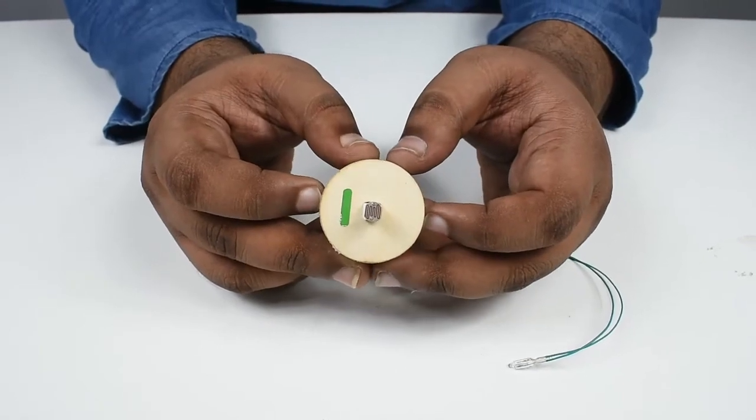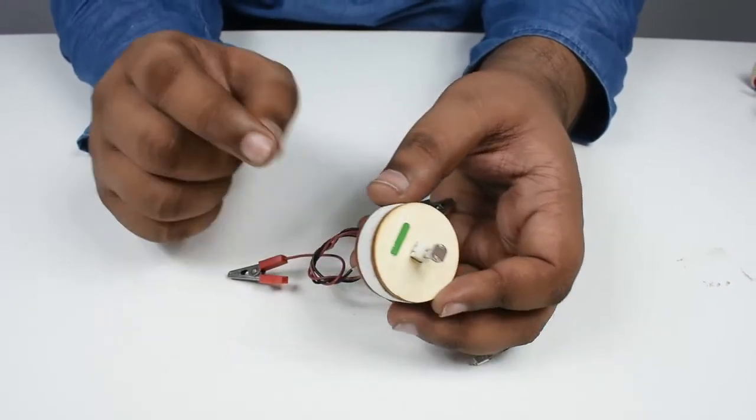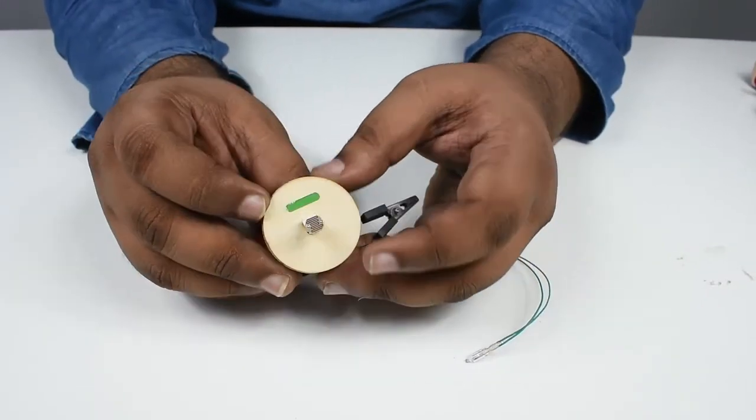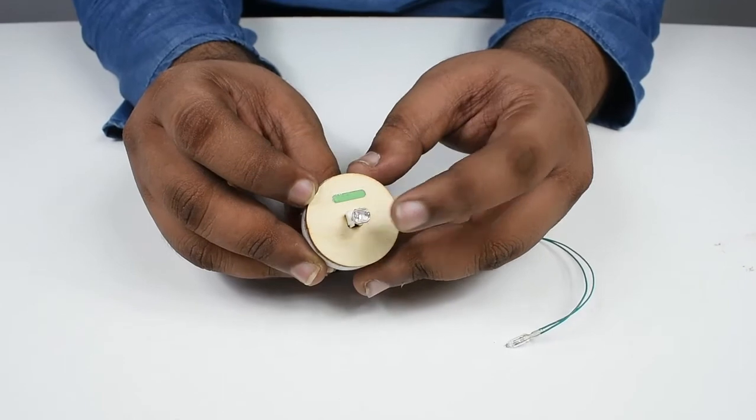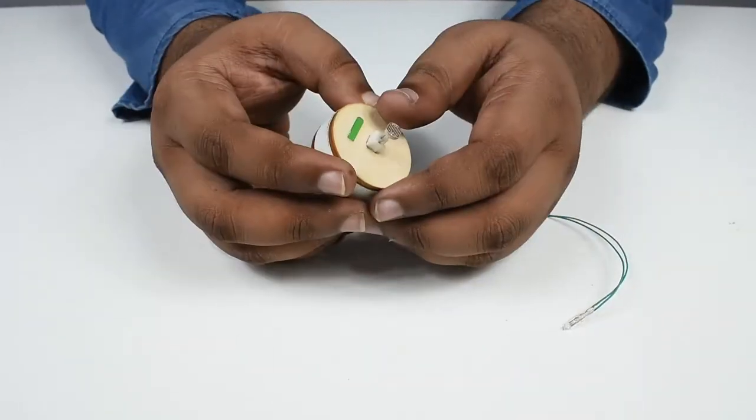We have this LDR which is light sensitive. When connected to a bulb with battery, the bulb will only glow when this part is exposed to the light. Once you cover this part with your hand completely, the bulb will stop glowing. Until next time.